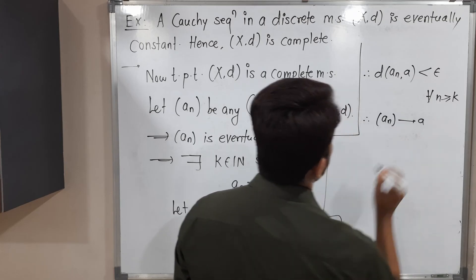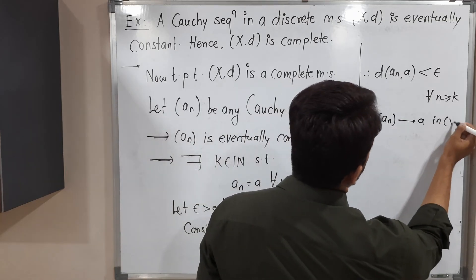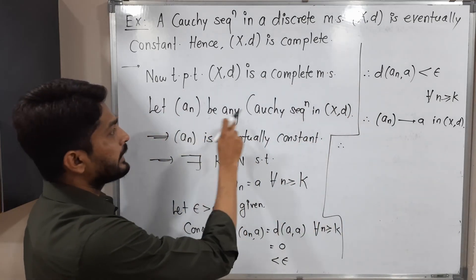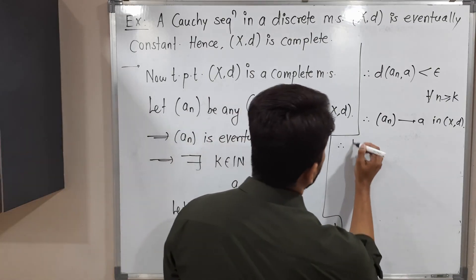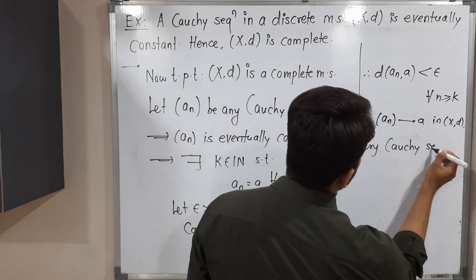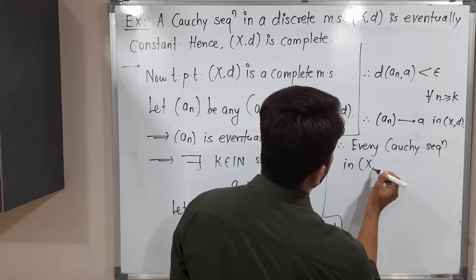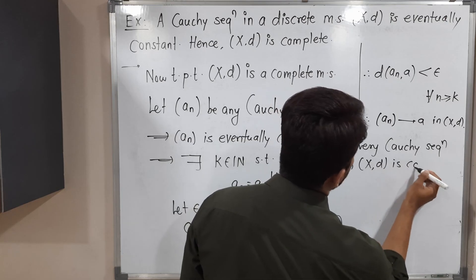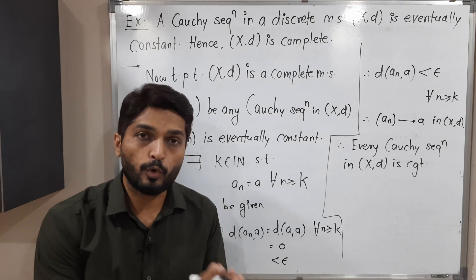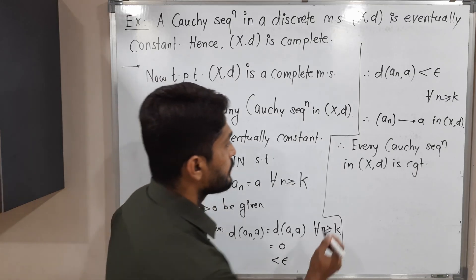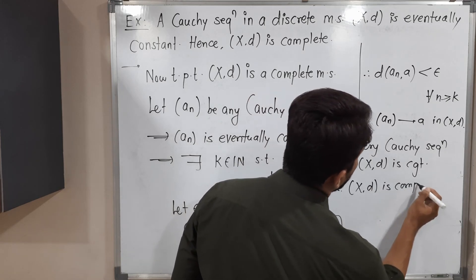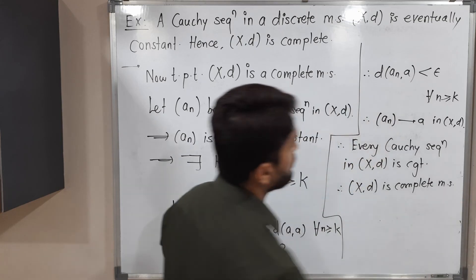Therefore a_n converges to a in X_d. We started with any arbitrary Cauchy sequence and proved it is convergent in X_d. This is the definition of a complete metric space — every Cauchy sequence is convergent — so therefore X_d is a complete metric space.